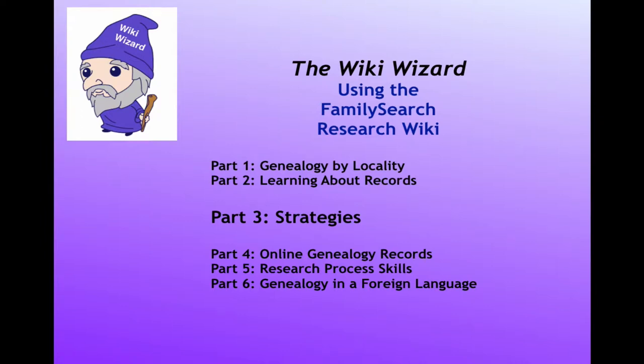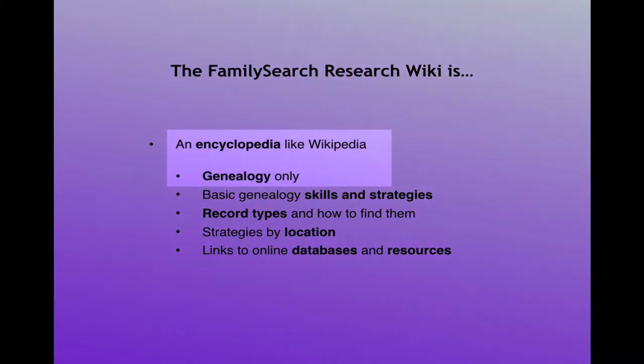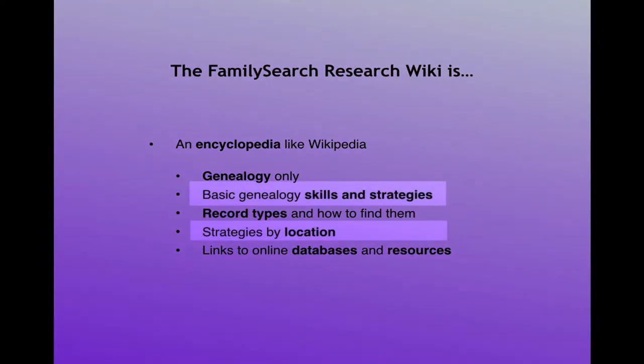This is the third video in a series intended to help you learn how to use the FamilySearch Research Wiki. The Research Wiki is an encyclopedia just like Wikipedia, with the exception that all of the articles are about genealogy. You will find articles on basic genealogy skills and strategies, including how to use strategies based on the location you are searching in — and strategies is the focus of this video.